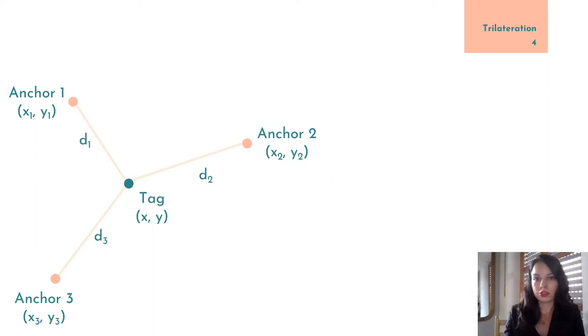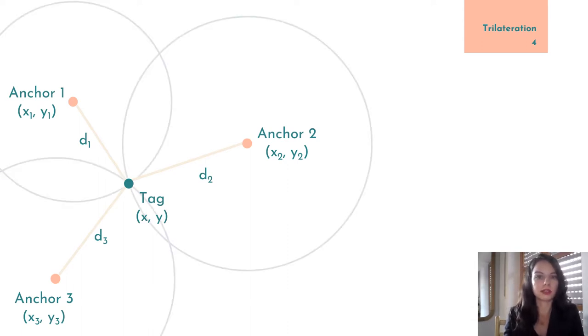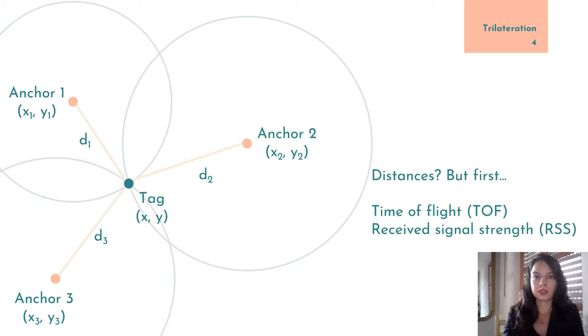We can use these messages, for instance, to estimate the distance between each anchor and the tag, and then compute the location of the tag at the intersection of circles centered at the anchors, and with their radius equal to the distance between each anchor and the tag. We usually estimate the distances based on the time of flight of the signal or the received signal strength.